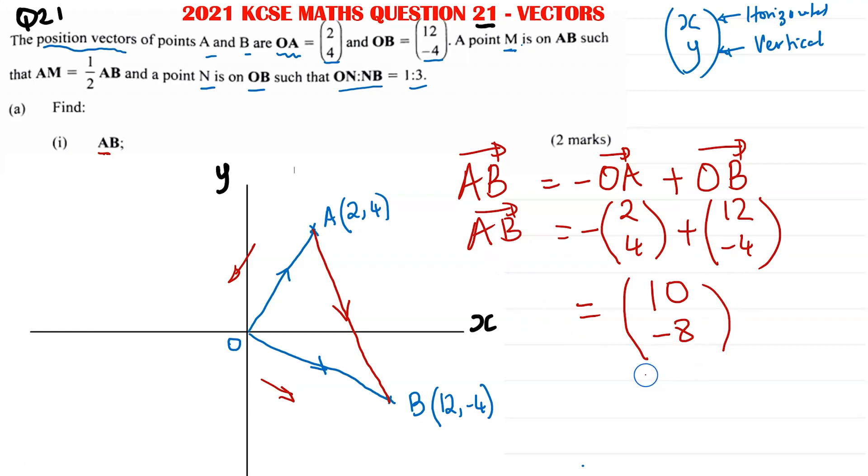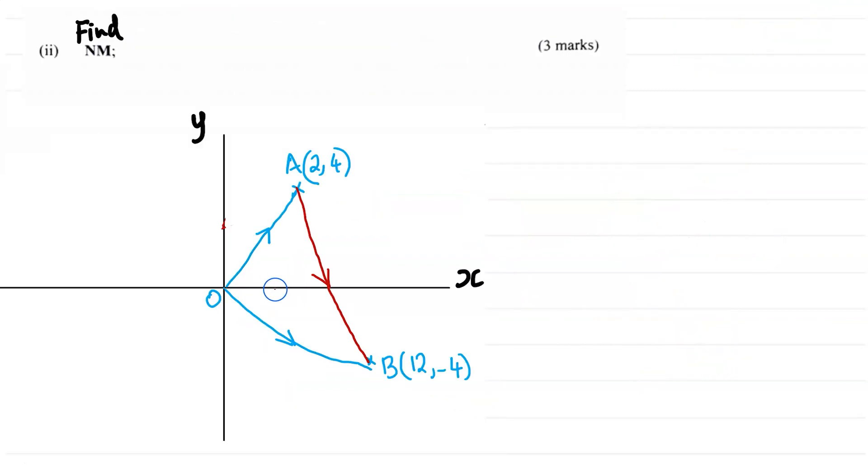And now for part II, we're asked to find NM. But we were given the ratio. This is what we were told: vector ON to vector NB is equal to 1:3.